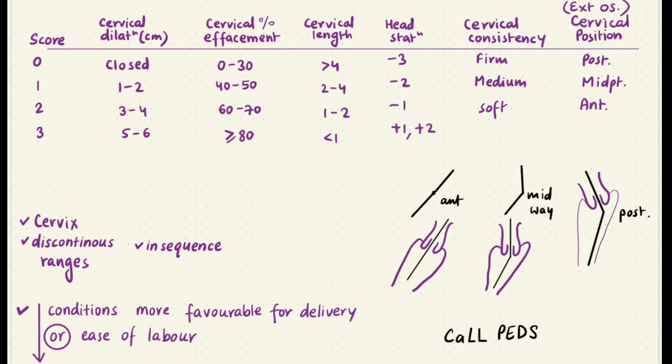Cervical dilatation: obviously the more dilatation there is, the more easily the baby will be able to come out. The more effacement there is — effacement is where the cervical tissue basically changes its consistency and length based on the baby's head coming down. Next is cervical length, which obviously shortens as the ease of labor increases.